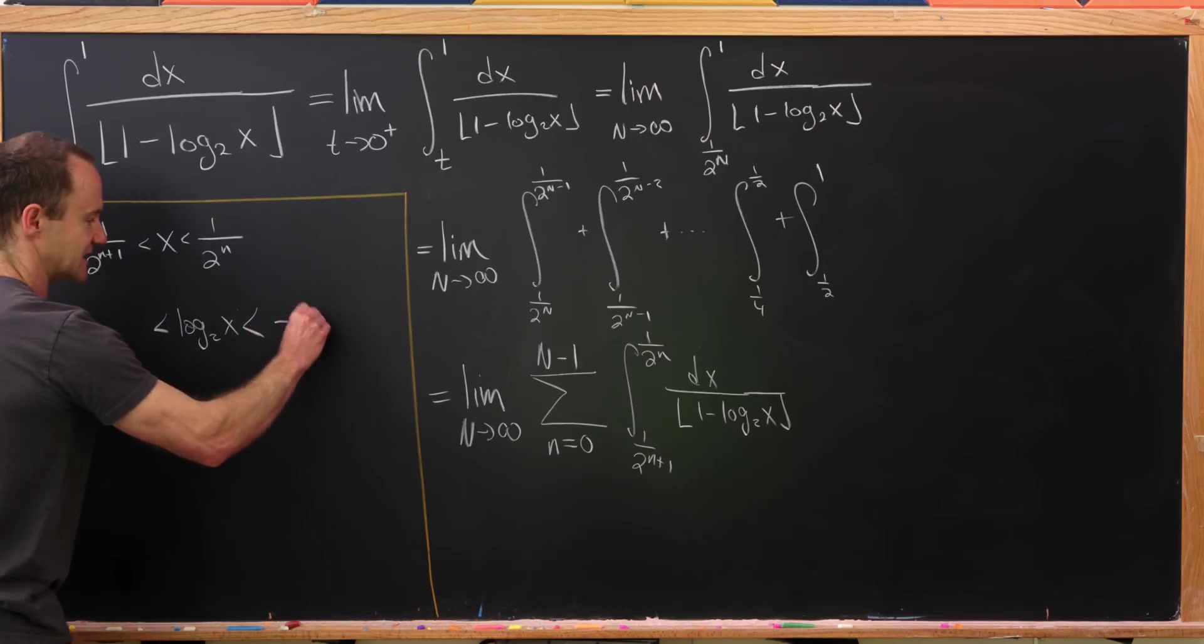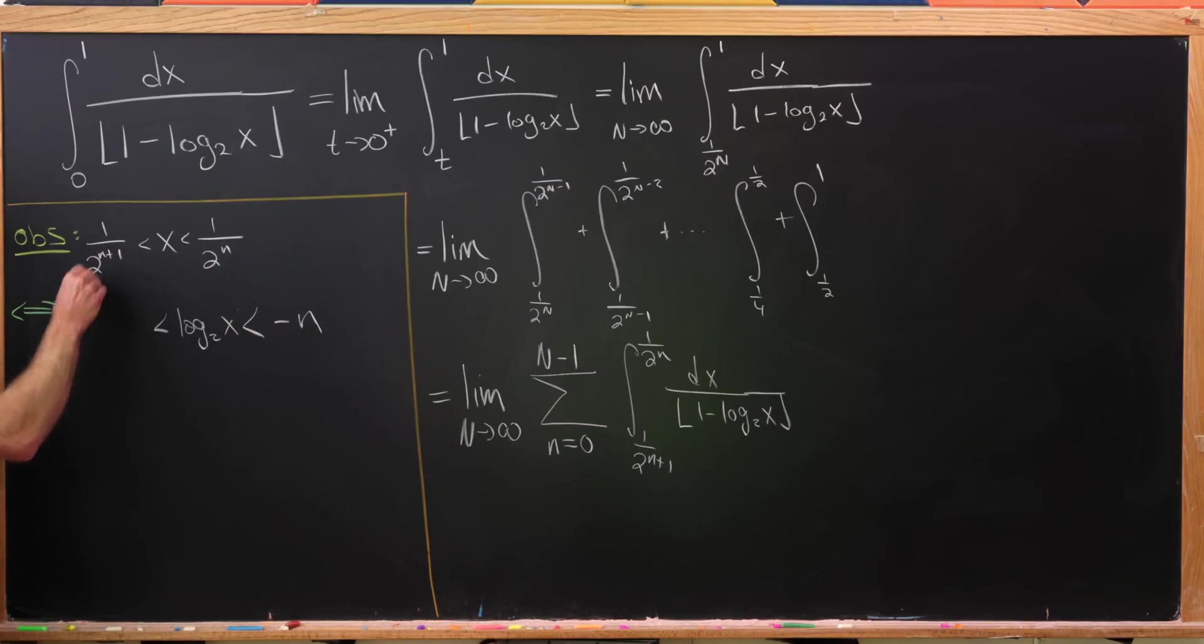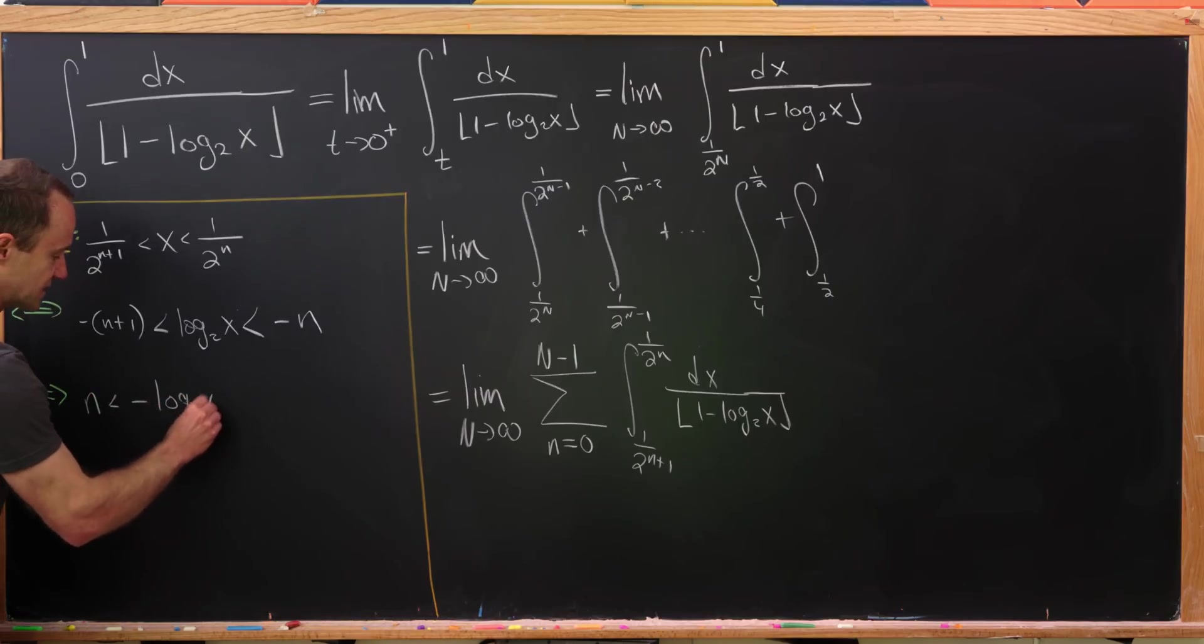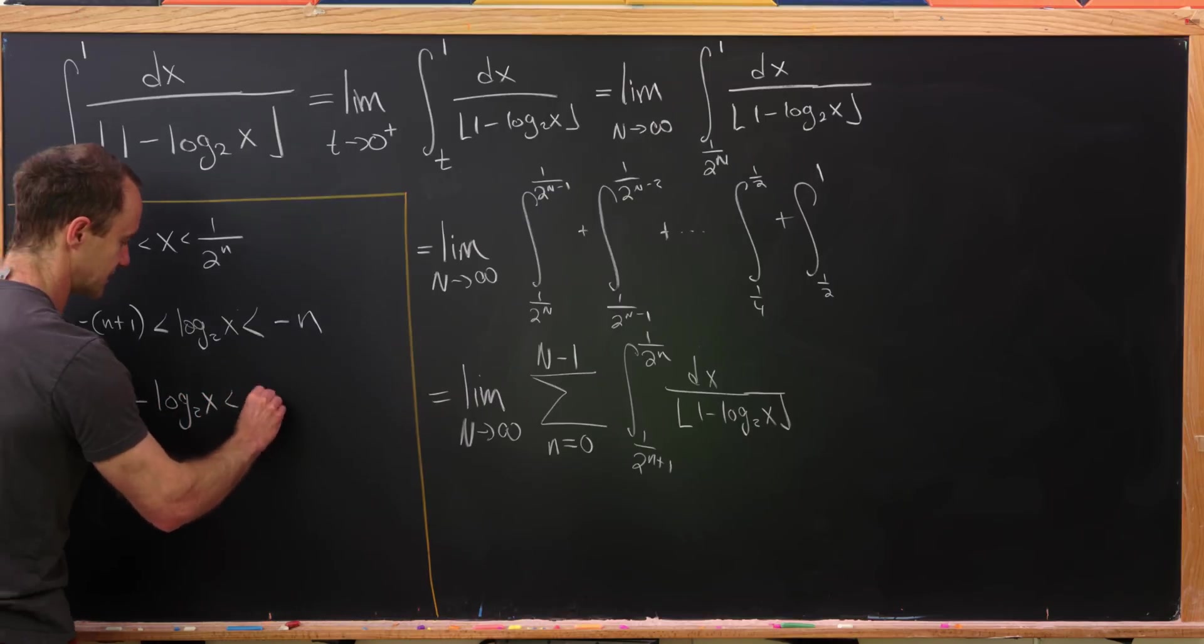Okay, so let's put our log base 2 of x in the middle, and then we can take the log base 2 of this. We'll get minus n plus 1. Now let's maybe negate the whole thing. That'll swap all the inequalities. We'll have n is less than negative log base 2 of x, which is less than n plus 1.